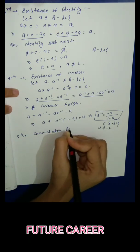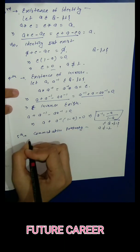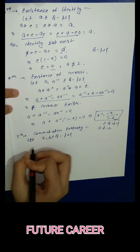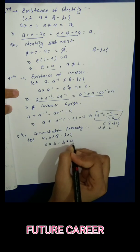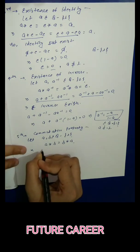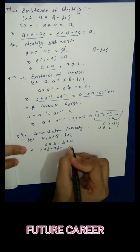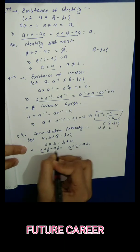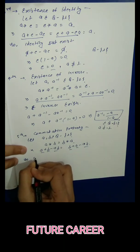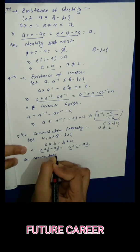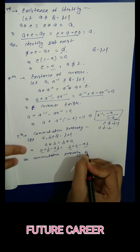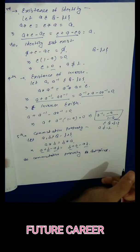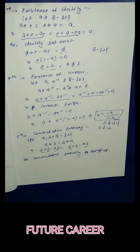Fifth property: Commutative. Let a,b belong to Q-{1}, then a★b = b★a. Applying star property: a+b-ab = b+a-ab. LHS and RHS are both equal, so the commutative property is satisfied.